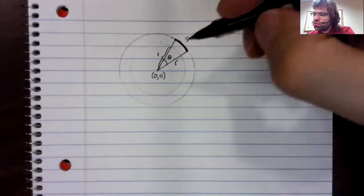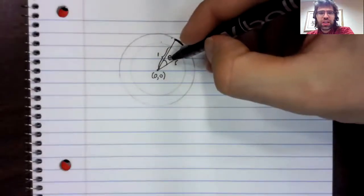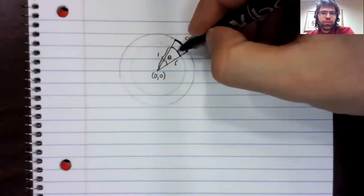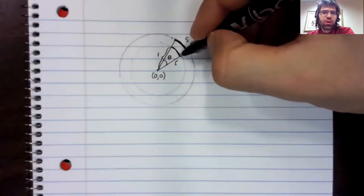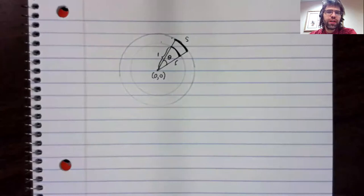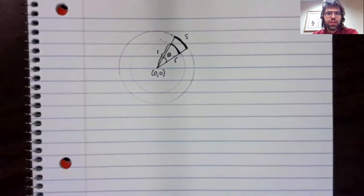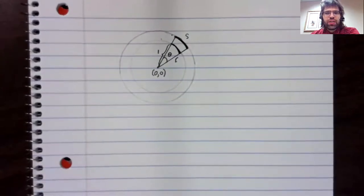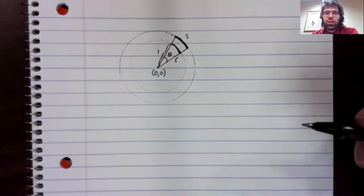And you see that this angle creates an arc on the unit circle as well. And now a bit of high school geometry.